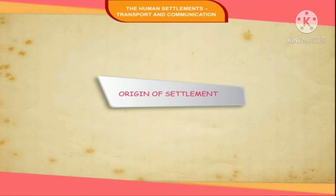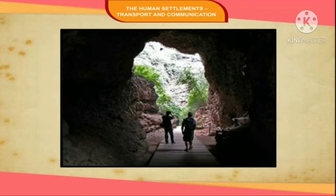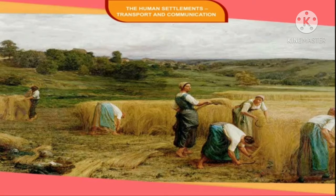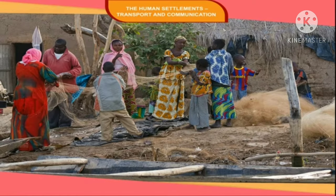Origin of Settlement: The ancestors of modern men were nomads and they lived in caves. These dwellings were the first human settlements. They were not continuously inhabited, as men had to move from place to place in search of food. Men started settled life when they learned to grow crops. The importance of leading a settled life increased as trade and commerce grew. Thus, the first towns came into existence.